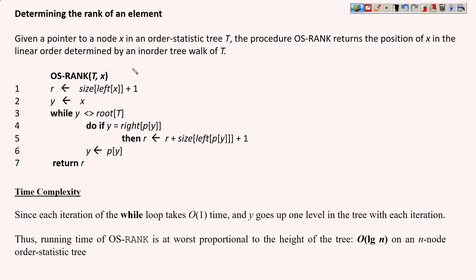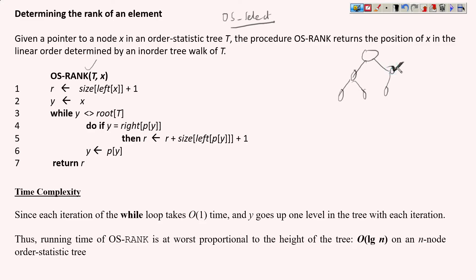This is the algorithm we are using — the method we have added to our default RB tree. We already discussed one operation, OS Select, in the previous video. Now here we will see a new operation: OS Rank. We are interested in finding the rank of a given element. Rank basically refers to the position of the element in the tree — specifically, at which position this element appears in the inorder traversal.